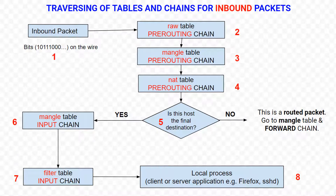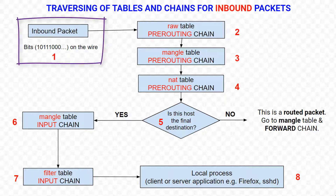Let's move on and have a closer look at the packet that is destined for our own local Linux machine. It would pass orderly through the following steps before actually being delivered to the application, client or server, that should receive it. When a packet first enters the firewall, it hits the hardware and then gets passed on to the proper device driver in the kernel. The bits of the physical layer are transformed into a data frame and then into a packet.